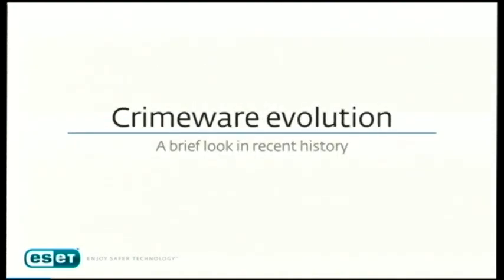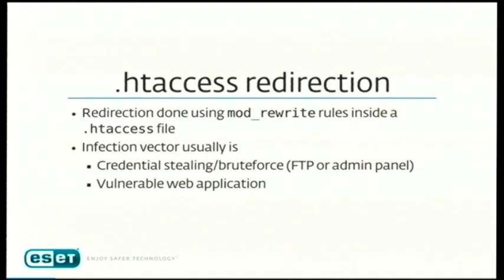Let's look at the recent history of crimeware we found on the web. The basic old-school stuff was HT access redirection — people doing mod_rewrite rules inside an .htaccess file to send traffic to an external site hosting JavaScript or ads. The infection vector is usually a vulnerable web application with easy remote code execution, credential stealing, or brute force. Even with only user-level access you can drop an .htaccess file.